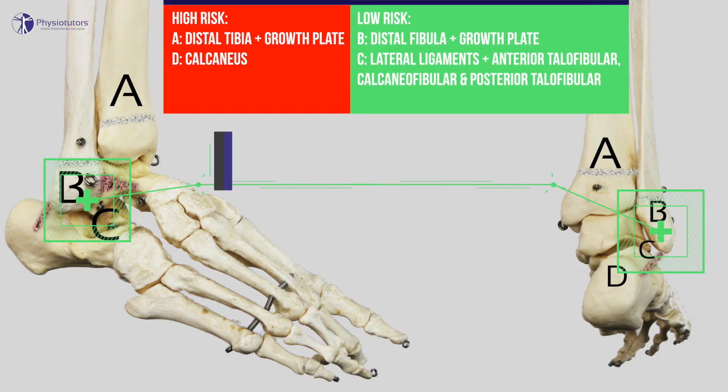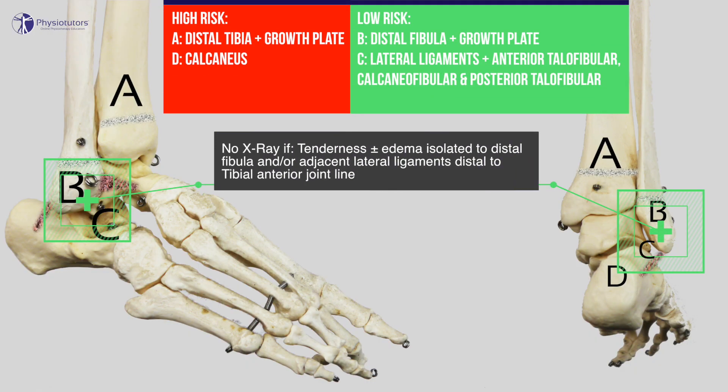The rule states that if a child presents with a low-risk injury on examination — referring to tenderness and swelling isolated to the distal fibula and/or adjacent lateral ligaments distal to the tibial anterior joint line — taking an additional x-ray may not be necessary to exclude a clinically important ankle injury.